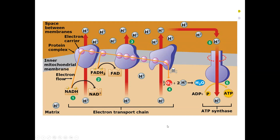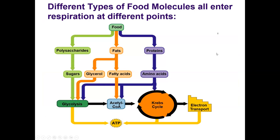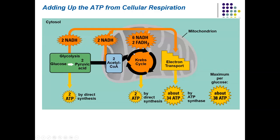This figure shows how different types of food molecules feed into respiration at different points. We don't eat just glucose — we eat other starches and sugars, fats (broken down into glycerol and fatty acids), and proteins (broken down into amino acids). All of these basic molecules enter the respiration pathway at different stages, where they're converted into something that can continue through glycolysis, the Krebs cycle, or ETS. All food molecules we eat are used to make energy.